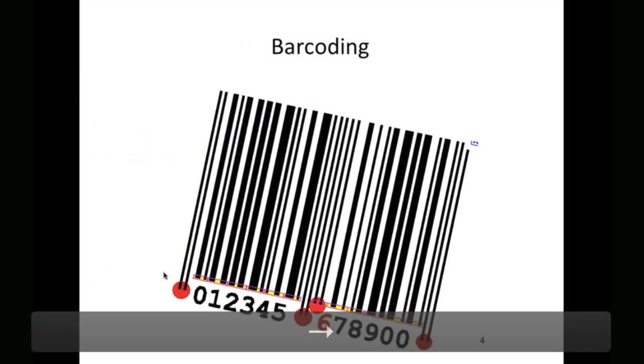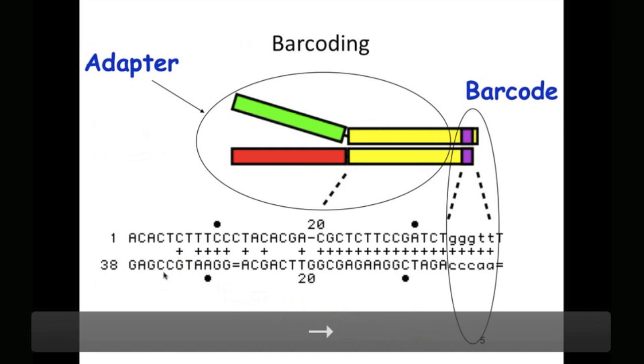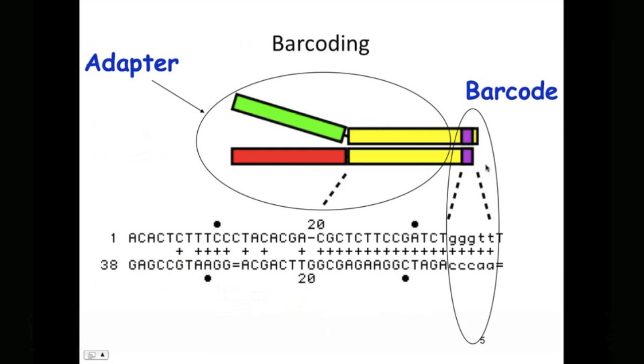So what is barcoding? Barcoding is simply the addition of a short nucleotide sequence, shown here in purple, that is added to the adapters that are used for PCR amplification. This is the Y adapter that's used by Illumina, and every sequence that's amplified with this adapter will have this unique barcode on it. So basically you create different libraries, each with a unique barcode.